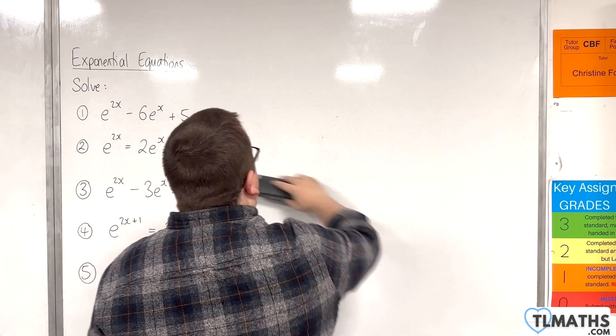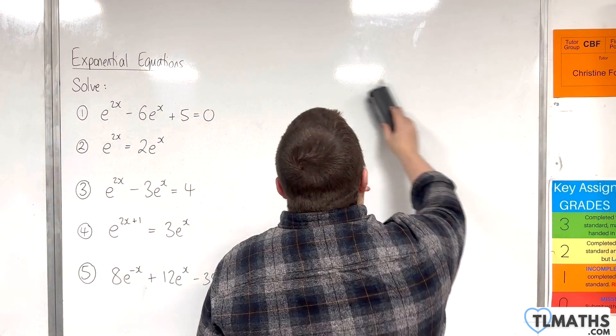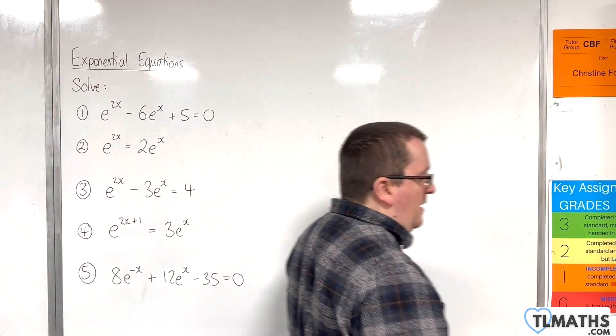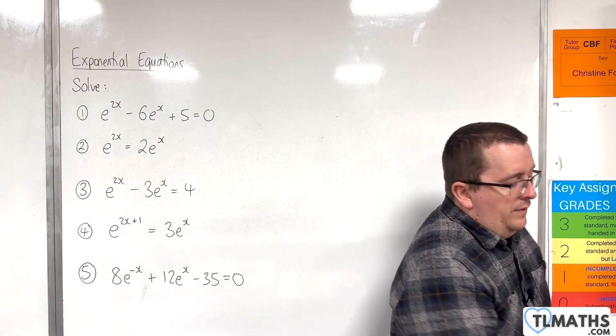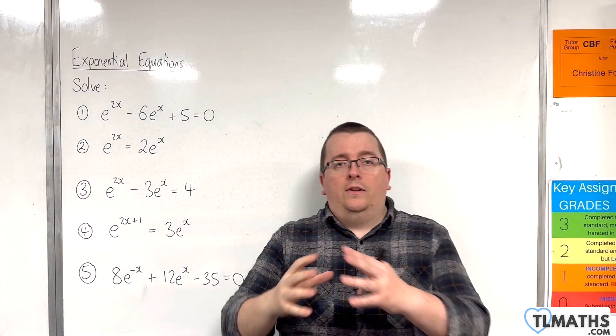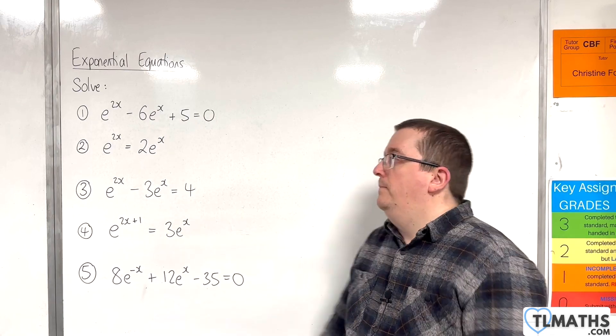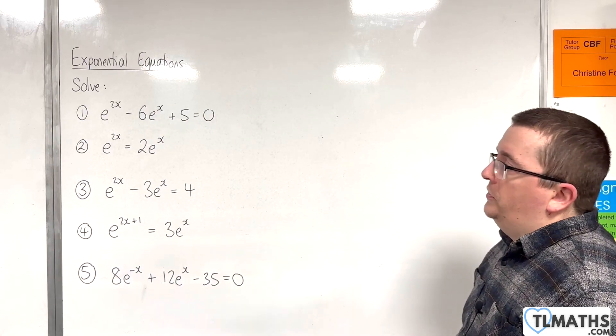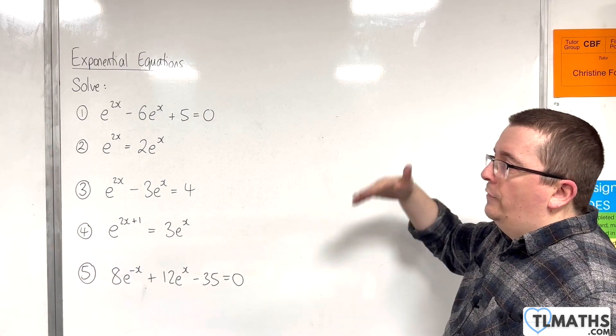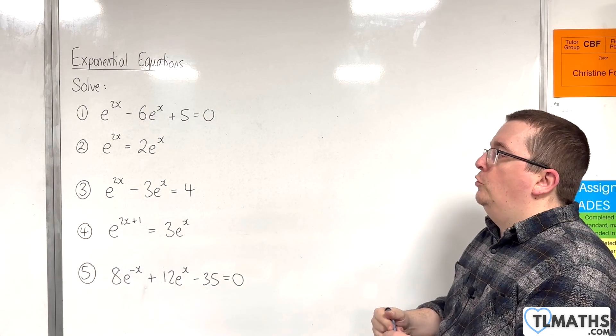I would recommend, for that example, that you write down that e to the x can never be 0, in order to justify that logical step.